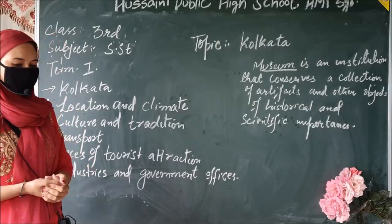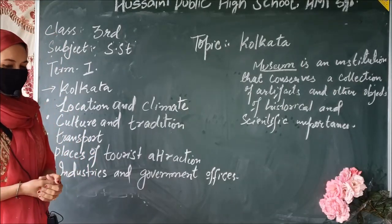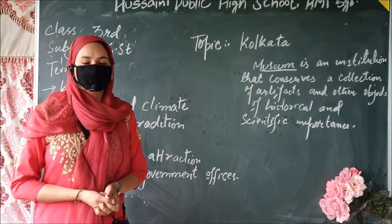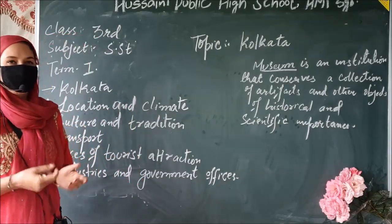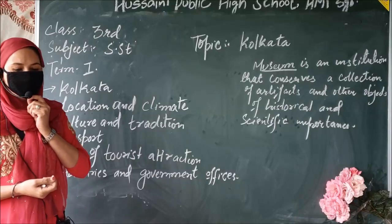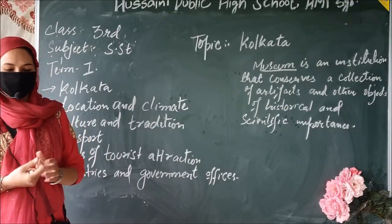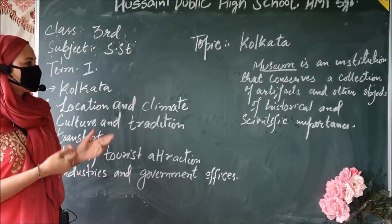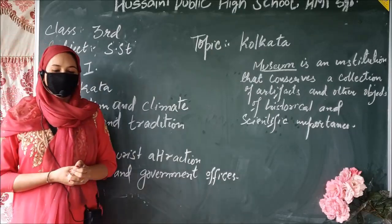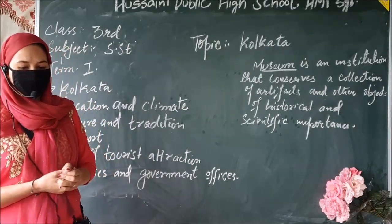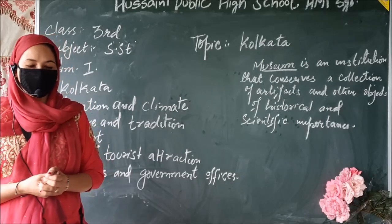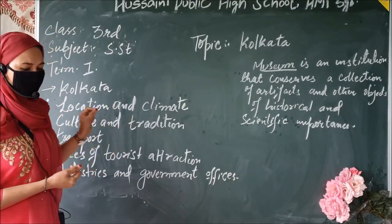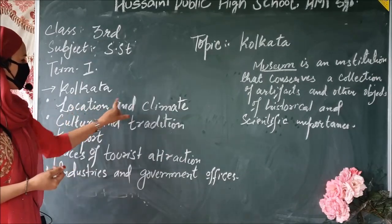Now we will discuss about its climate. Kolkata experiences hot and humid summers, while its winters are moderately cold. If we talk about rainfall, it receives rainfall in the months of June, July, August and September. So this was a little introduction about location and climate.